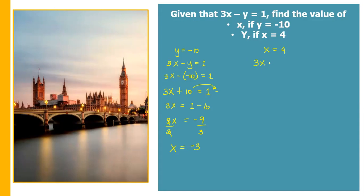Next, find the value of y when x is equal to 4. The equation is 3x minus y equals 1. Substitute x with 4: 3 times 4 minus y equals 1, so 12 minus y equals positive 1.